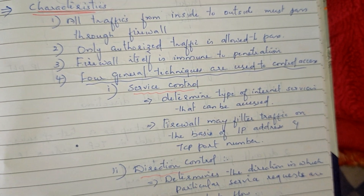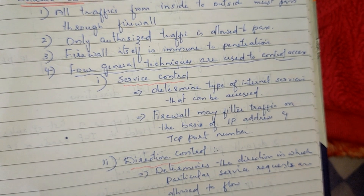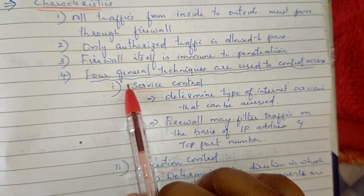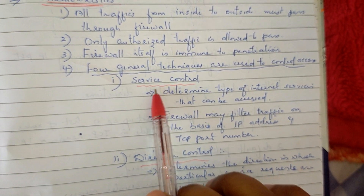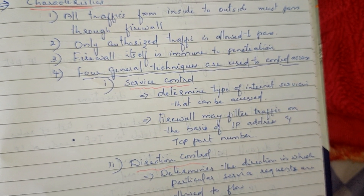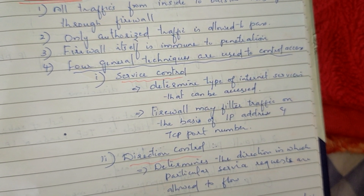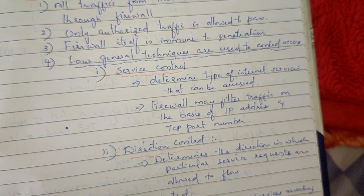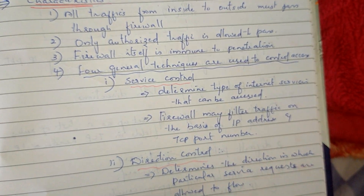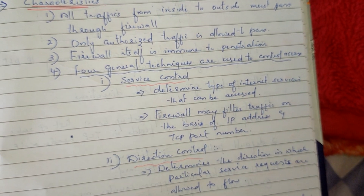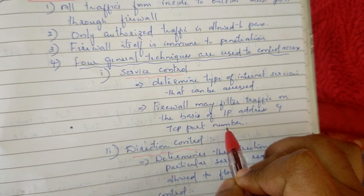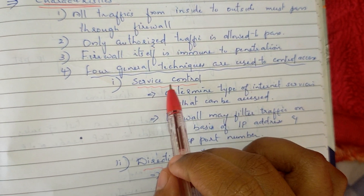The first one is Service Control. The network traffic in the outside world is that network traffic. How do you do the transmission through the firewall? The traffic will be filtered on the basis of IP address and TCP port number. What type of service is determined by service control.